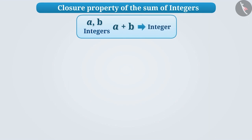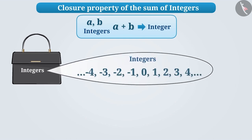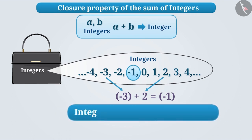Suppose there is a bag of all integers. We take any two integers from this bag and add them. If the result obtained is the number inside this bag, then we say that integers are closed under addition.